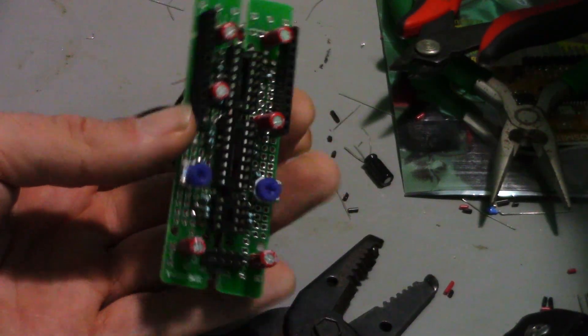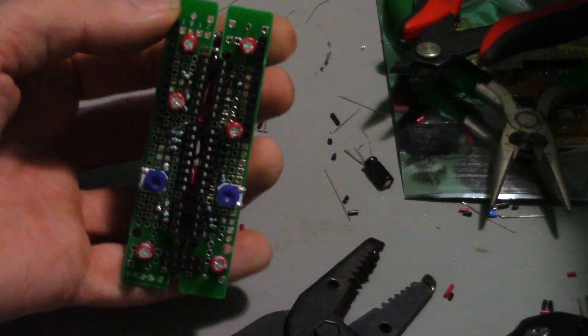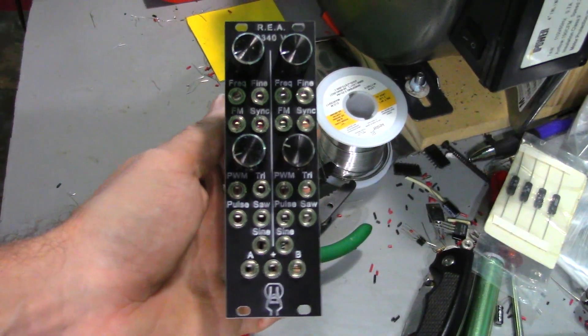The chip sockets straddle two pieces of perfboard, with all the components mounted and connected to the faceplate.